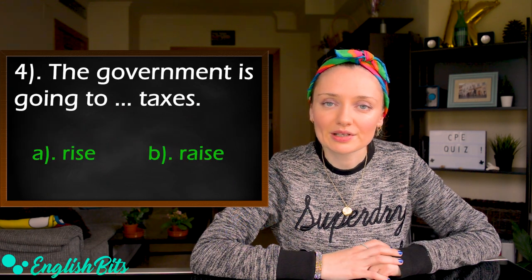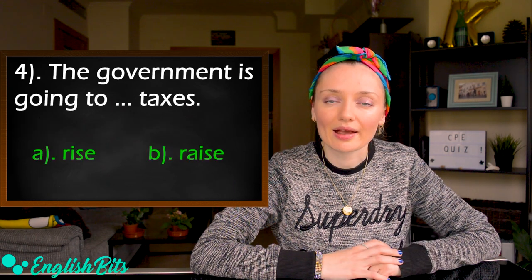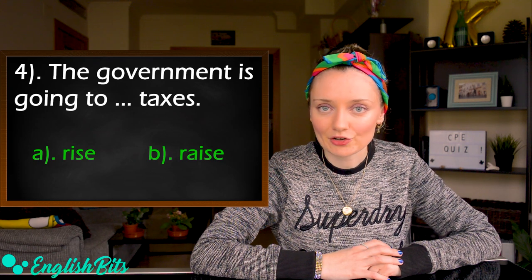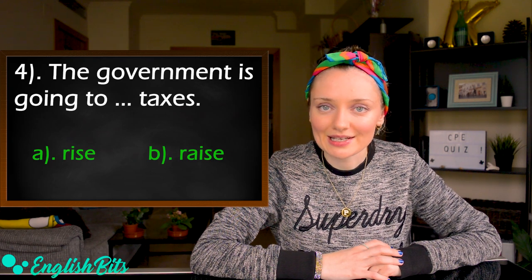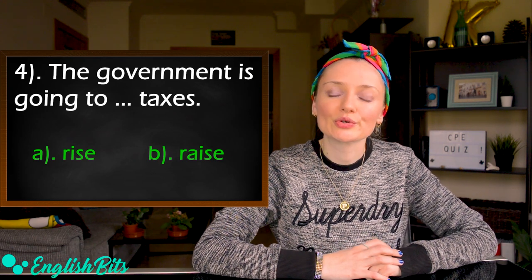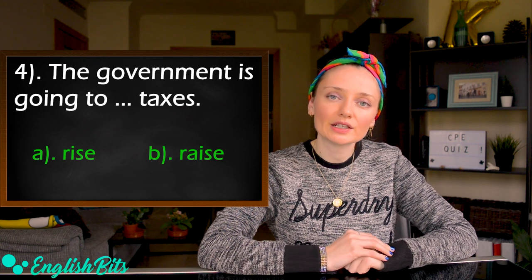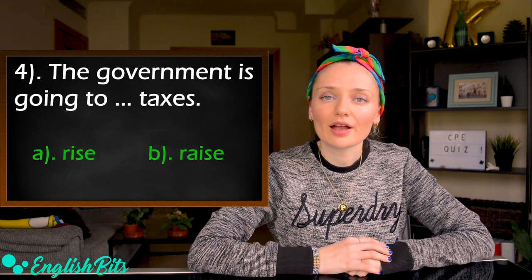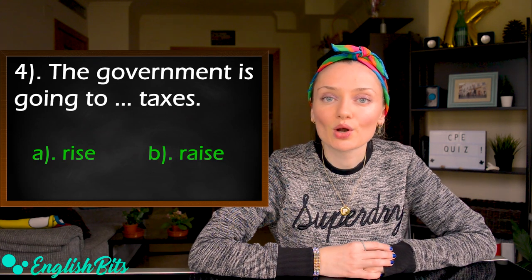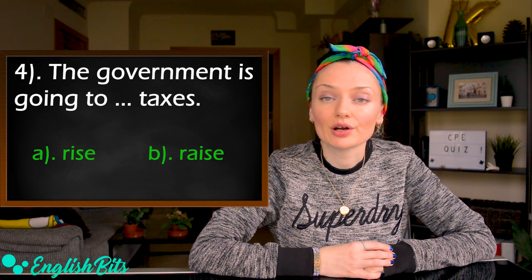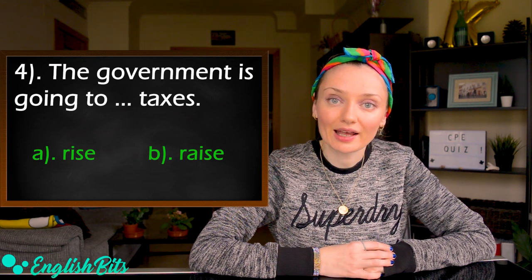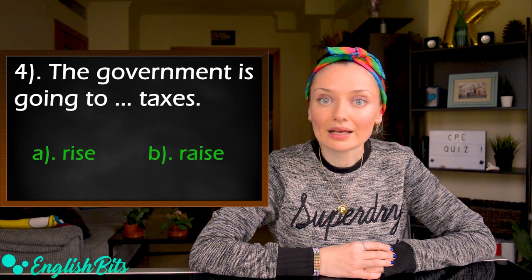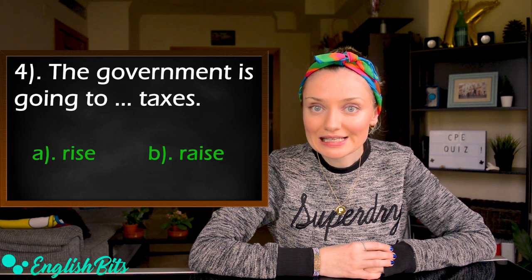Number four: The government is going to — A) rise, or B) raise — taxes. Choose the correct answer.